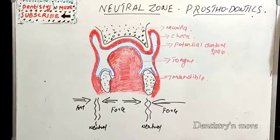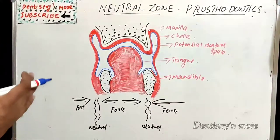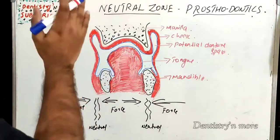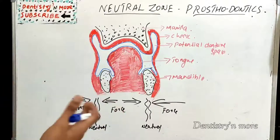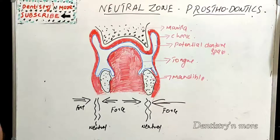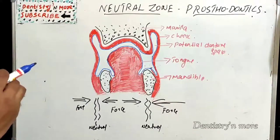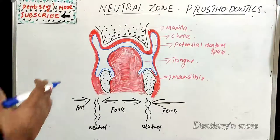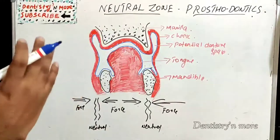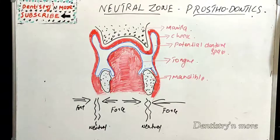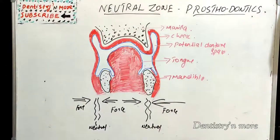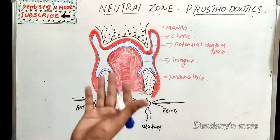As per the definition given by GPT, the neutral zone is a potential space between the lips and cheeks on one side and the tongue on the other — the area where the forces between the tongue and cheeks or lips are equal or neutralized. This concept is applied in denture fabrication: for each individual patient, there exists a specific area within the denture space where the function of the musculature will not unseat the denture. Our ultimate aim is that there should be no hindrance by the muscles to the denture, so we should fabricate the denture in harmony with muscle action.